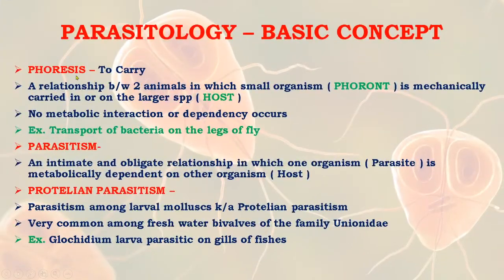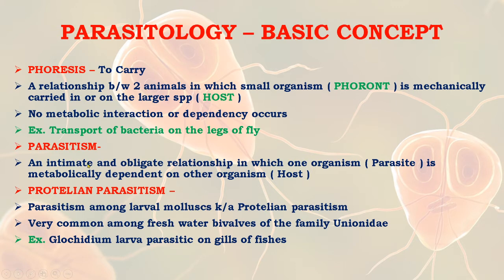Phoresis literally means 'to carry.' It is a relationship between two animals in which the smaller organism, known as the phoront, is mechanically carried in or on the larger species (the host). In phoresis, no metabolic interaction or dependency occurs — this is a very important difference between parasitism and phoresis. An example is the transport of bacteria on the legs of a fly.